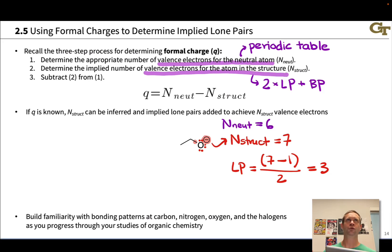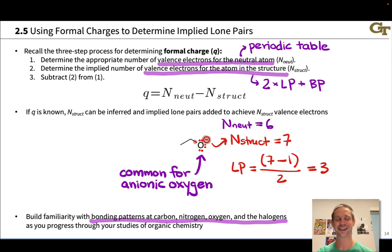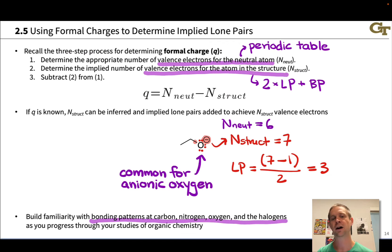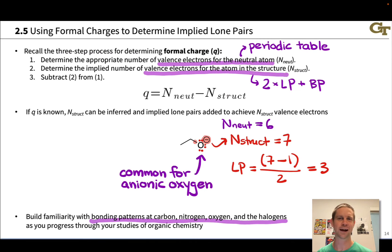This kind of math allows us to draw in implied lone pairs. But you want to do this math less and less as you advance through organic chemistry. To do that, we'll build familiarity with common bonding patterns at carbon, nitrogen, oxygen, and the halogens, so that lone pair accounting becomes second nature. For example, it's very common for anionic oxygen to have three non-bonding lone pairs and a single bond — this is almost always what you'll see negatively charged oxygen doing in ionic compounds where O minus shows up.